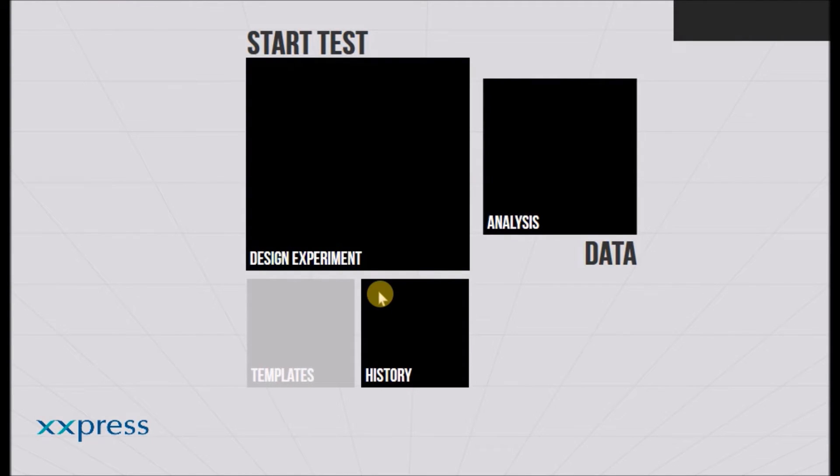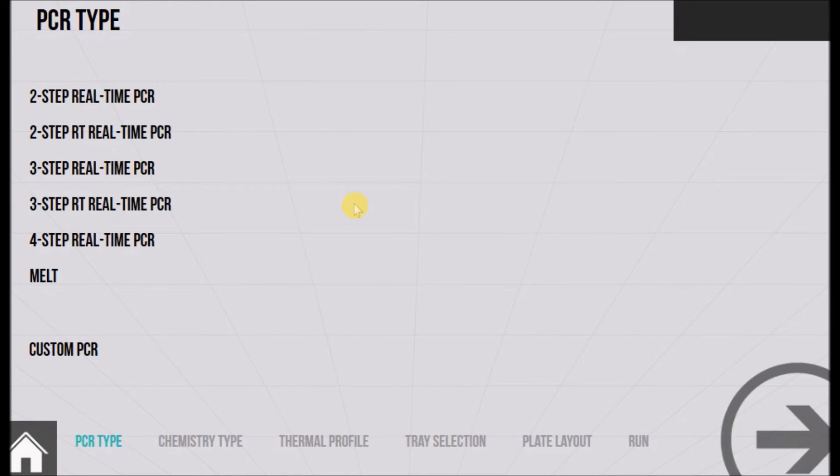The final tab is the design experiment tab which enables users to create an experiment from scratch, which is what I'll show you in this video. First select the type of PCR to be performed, whether it's a 2-step PCR or 3-step PCR for example. Click the next button to confirm.